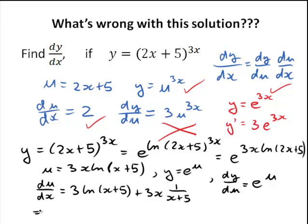And of course, dy/du is simply e to the power of u again. And in the last step, I would have dy/dx, which is going to be according to the chain rule, which is already listed up there, dy/du times du/dx. So, that's e to the power of u times 3 ln of x plus 5 plus 3x over x plus 5.